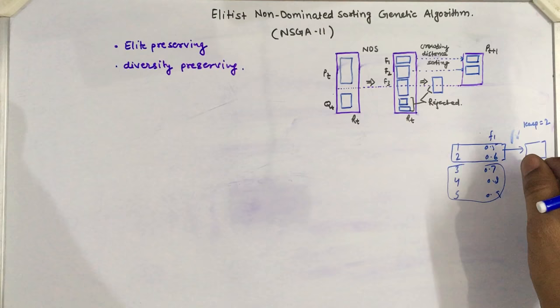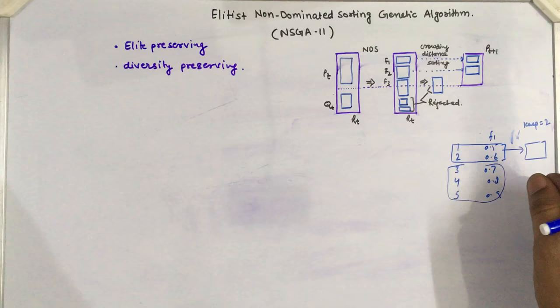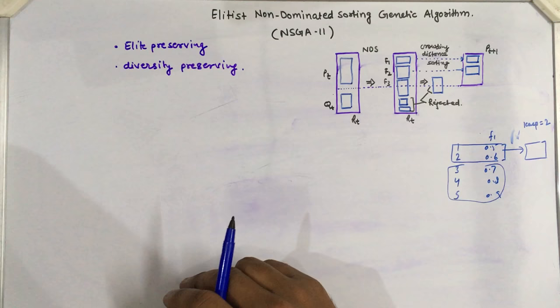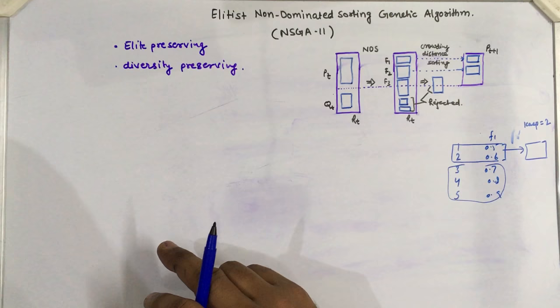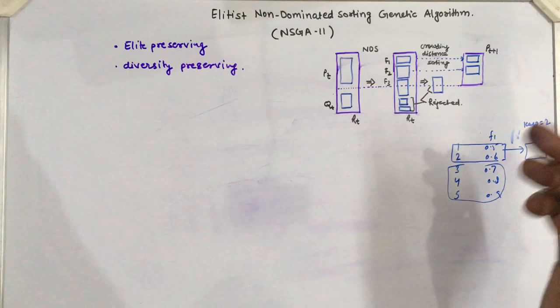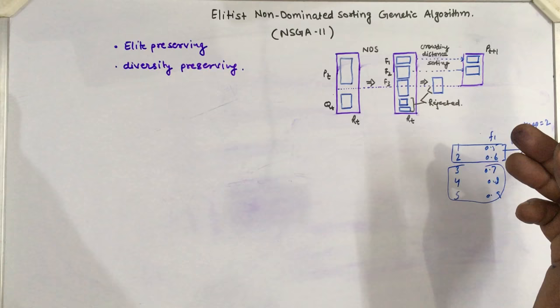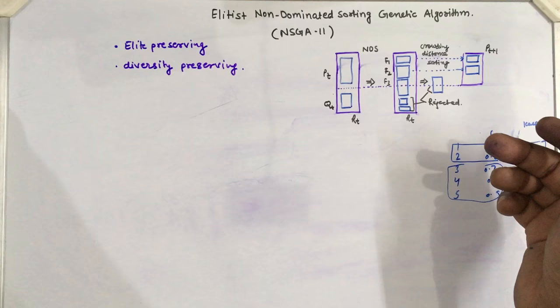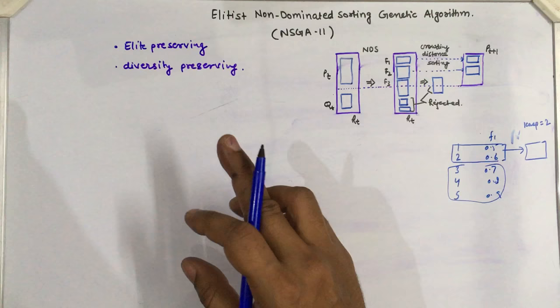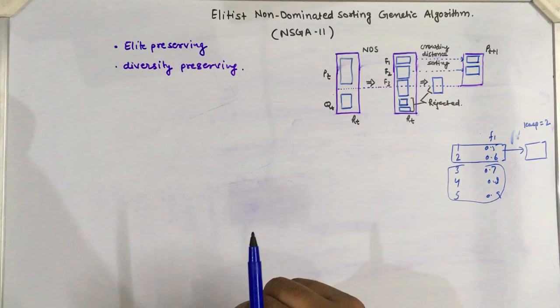Elitism plays a key role in single-objective optimization, and similarly in multi-objective optimization. The strength of NSGA-II is that it has an elite-preserving property and also supports diversity in the population. Various algorithms in the literature implement elitism but cannot maintain diversity. In NSGA-II, there are two prime concerns: maintaining the elite-preserving property and maintaining diversity in the population.